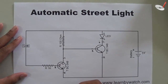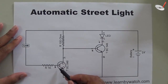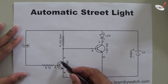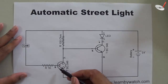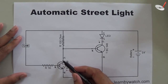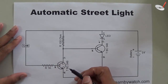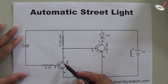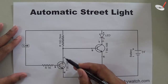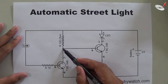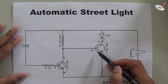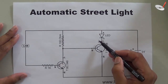A transistor can operate in three regions. In the active region, the emitter junction is forward biased and the collector junction is reverse biased. In the saturation region, both junctions are forward biased — which is what is happening here, so this transistor is working in the saturation region. The third region is the cutoff region, where both junctions are reverse biased. Because this transistor is in saturation, the voltage across it will be very low, which reverse biases the second transistor, turning the LED off.